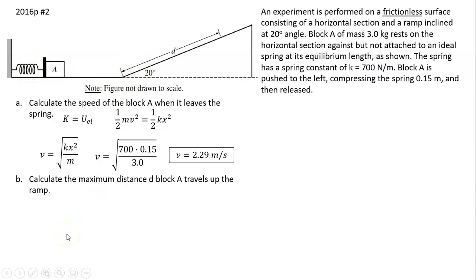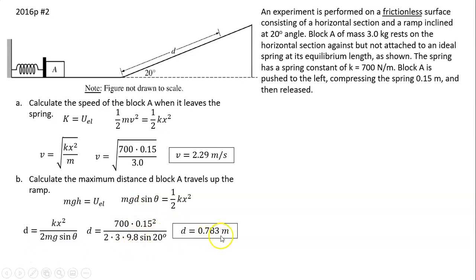Both forces doing work are conservative forces, so total mechanical energy is conserved. Energy is transformed from the energy in the spring and it becomes gravitational potential energy. mgh equals the energy of the spring, but they didn't ask you h, they ask you d. The relationship between d and h is h = d sin θ. From here you can solve for d. Plug in the given value: d = 0.783 meter.